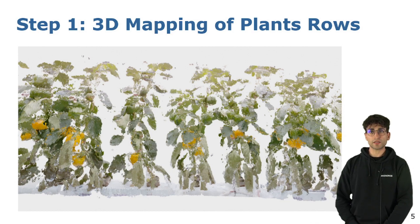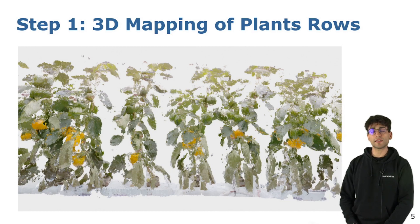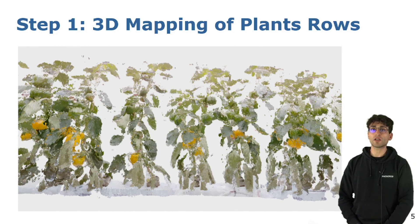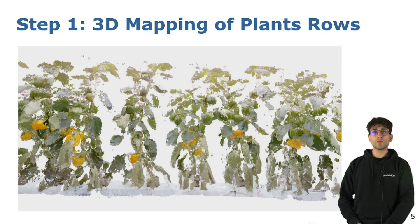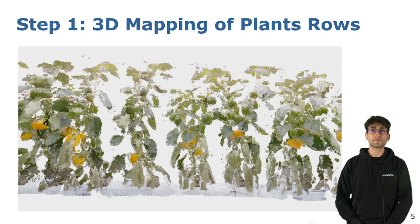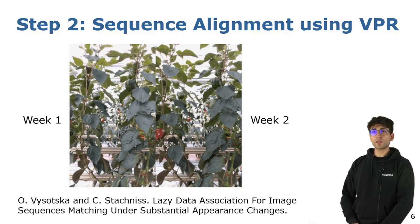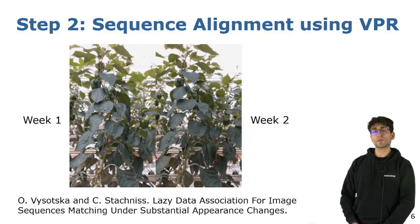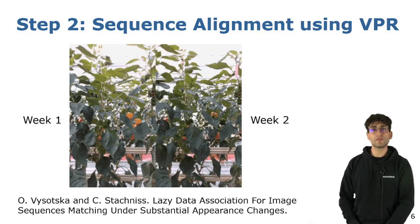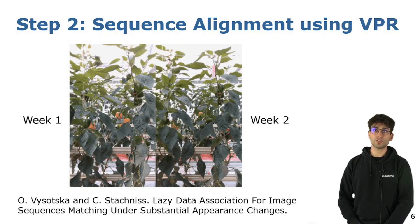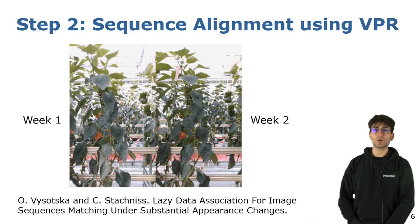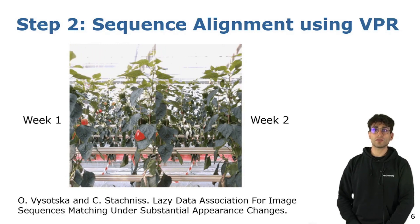The initial step of our pipeline consists in taking the first recorded sequence and producing a dense 3D point cloud, by unprojecting 3D points from the incoming RGB SLAM. In this slide, we can see an example of the obtained result. Once this is done, we take the second sequence, recorded in a different session some time later, and we use the visual place recognition approach presented in a previous work to compute image associations.